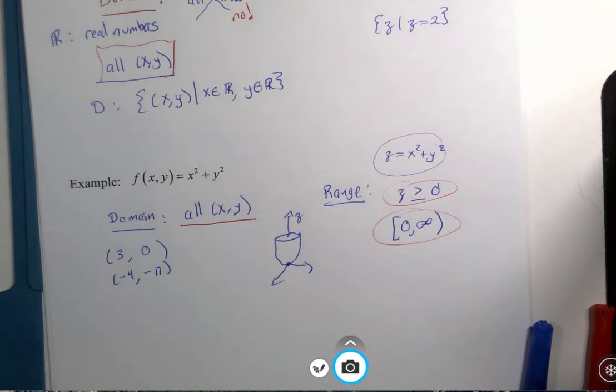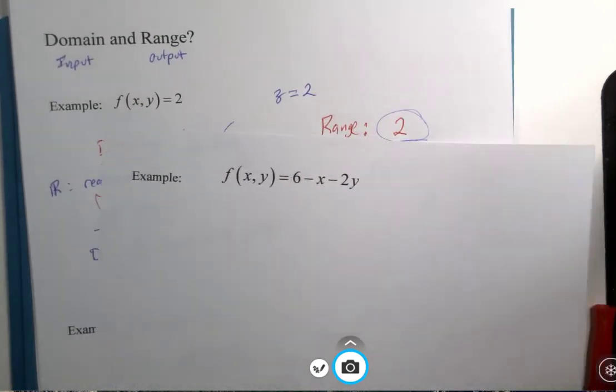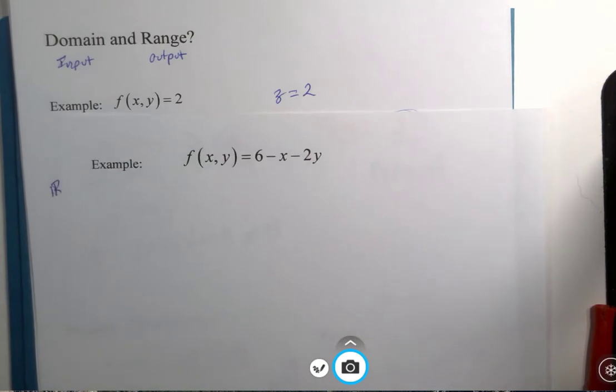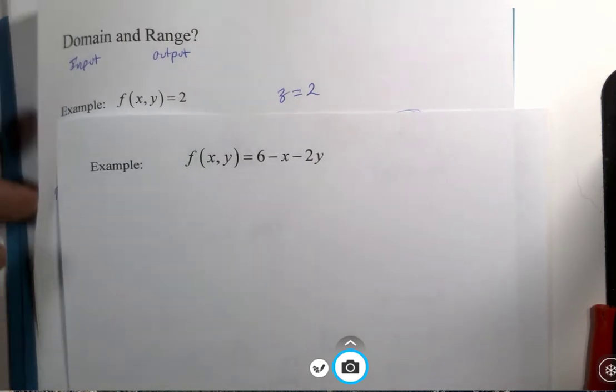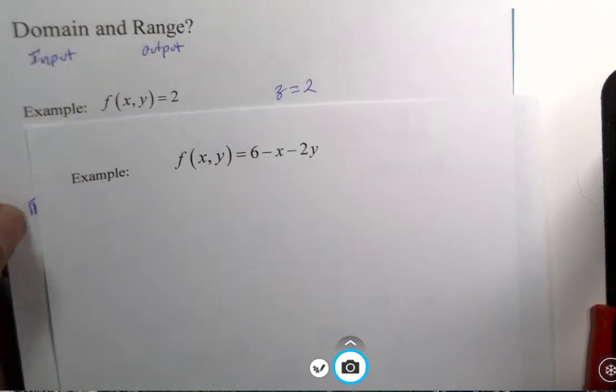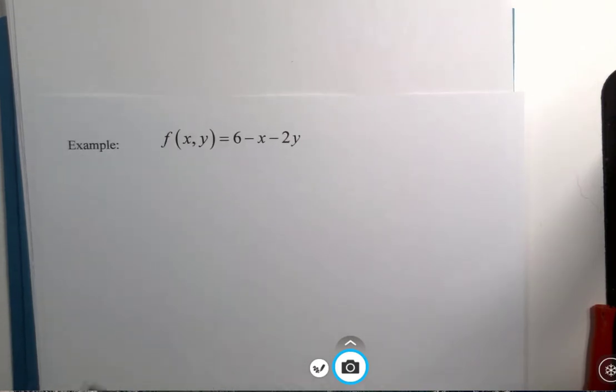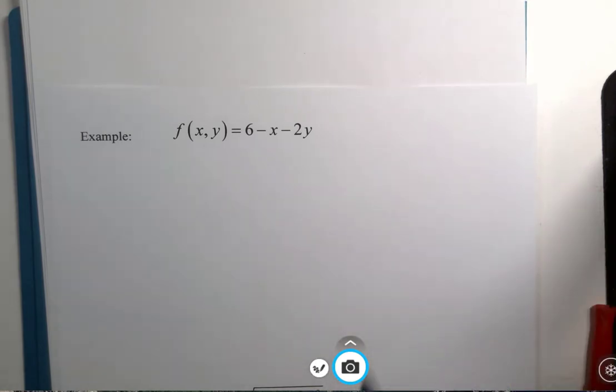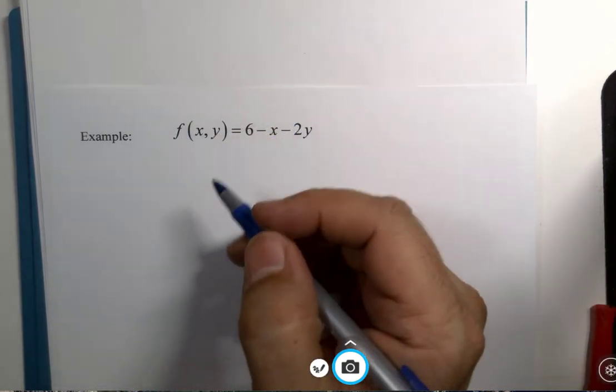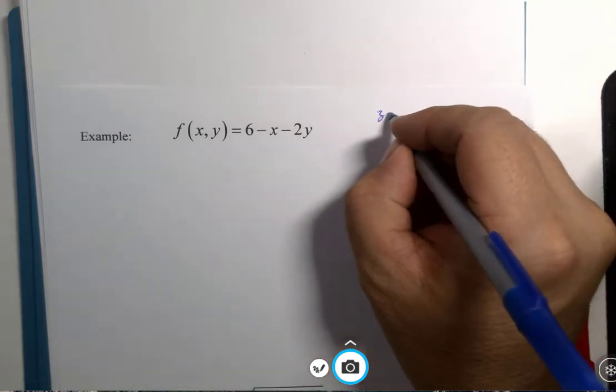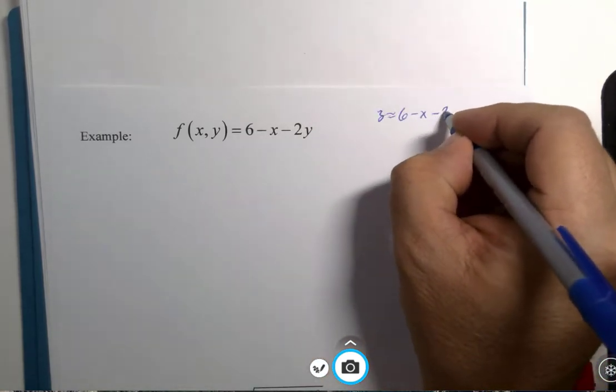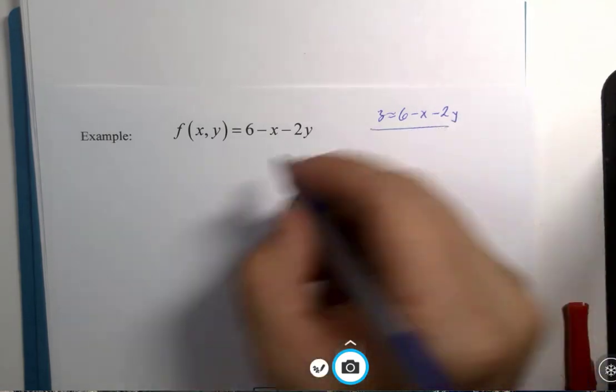Let's look at another one. We saw this graph: f(x,y) = 6 - x - 2y. Domain. So ask yourself, is there any algebra that causes undefined values here?